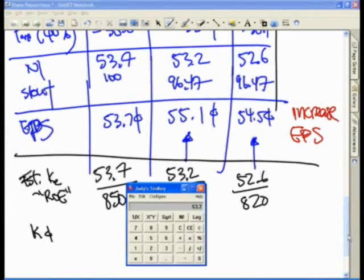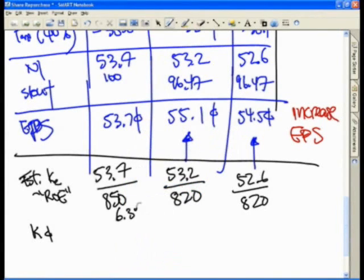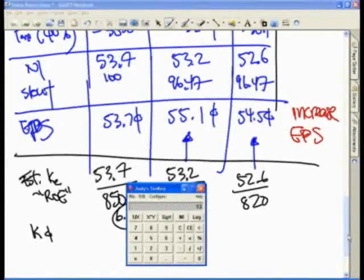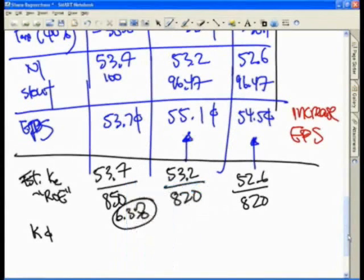$53.7 over $850 is 6.3%. $53.2 over $820 is 6.48%, 6.5% cost of equity.